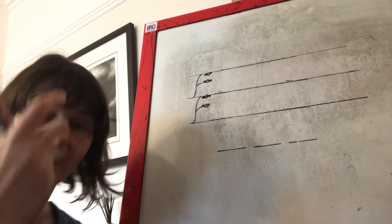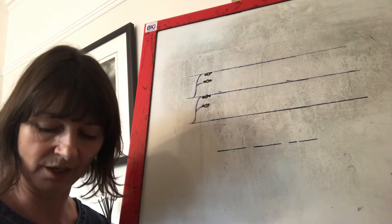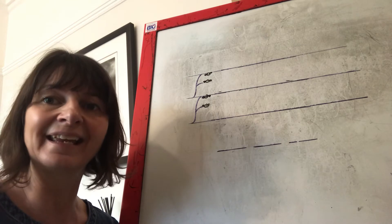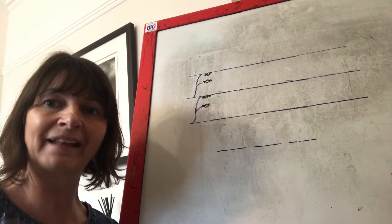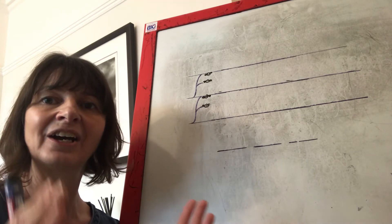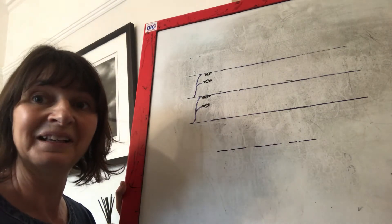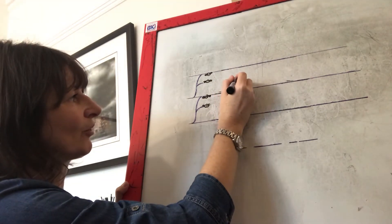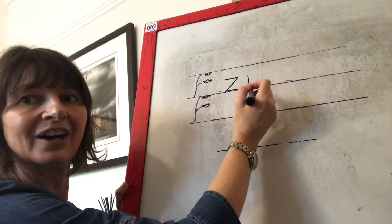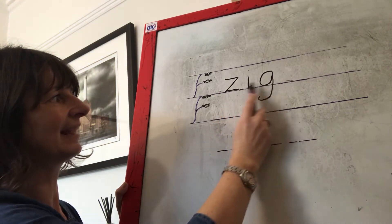We are going to do some word building. We need our robot arms again because we're going to segment. When we write words, we segment so we can hear all the sounds in the word. Show me your robot arms. The first word is zig. Can you say zig? Let's segment the word zig: Z-i-g. Zig. First sound — that's it, it's our new sound, it's the Z. We need to push across, slide down, push across. Let's say the sounds and read the word: zig. Well done.